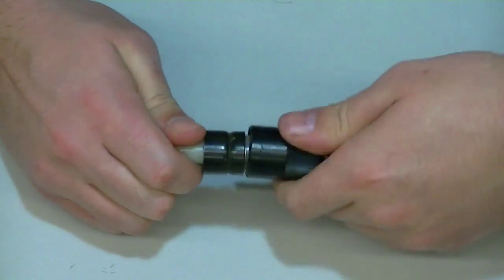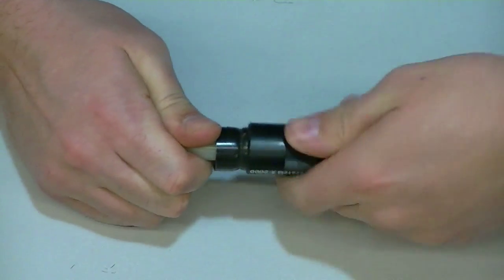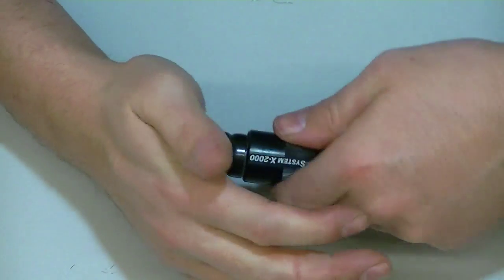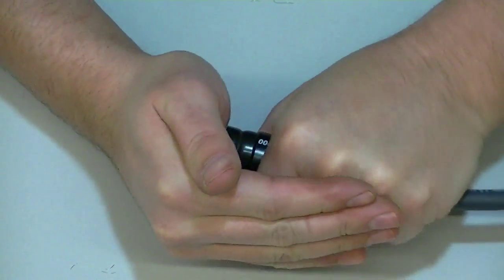Finally, push the X2000 housing over the entire socket assembly until a clicking sound is heard indicating the locking in of the housing.